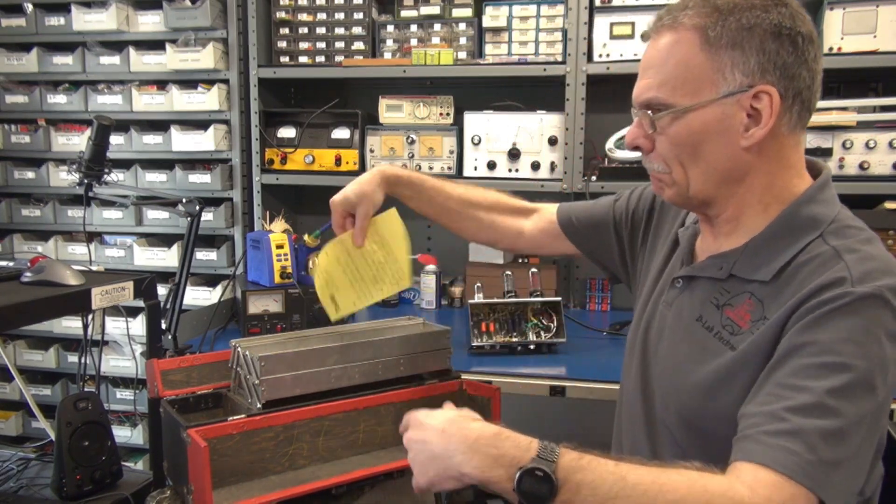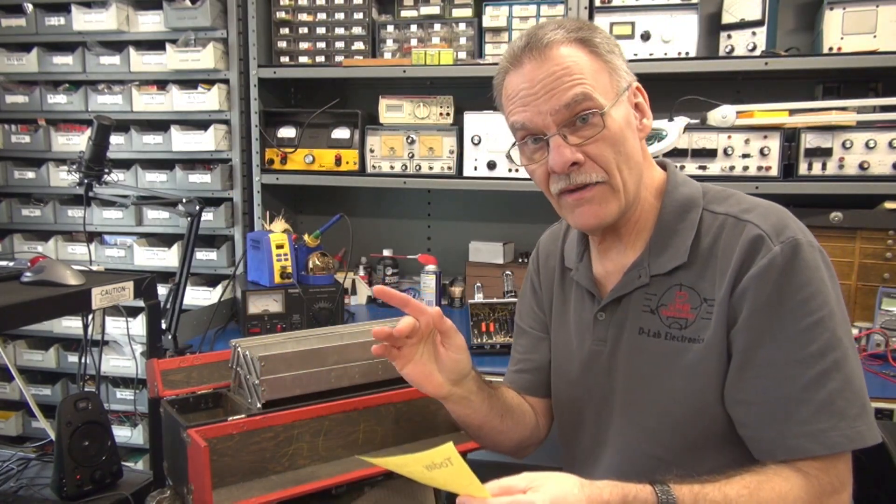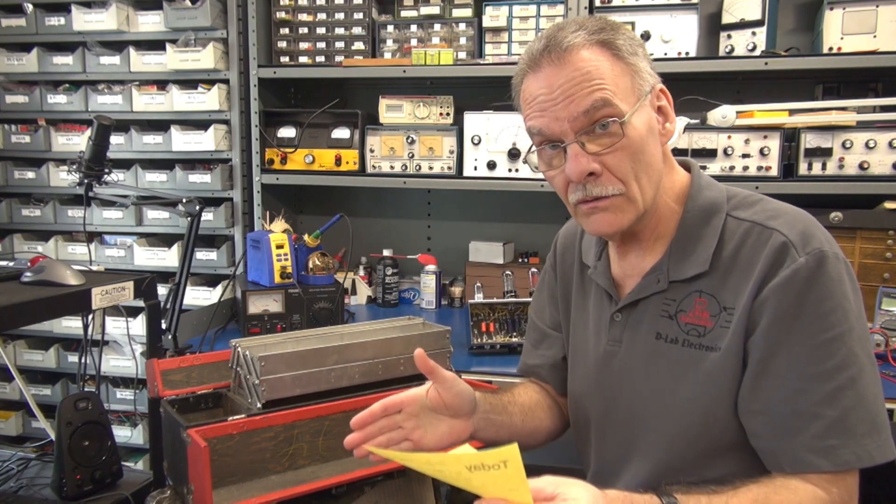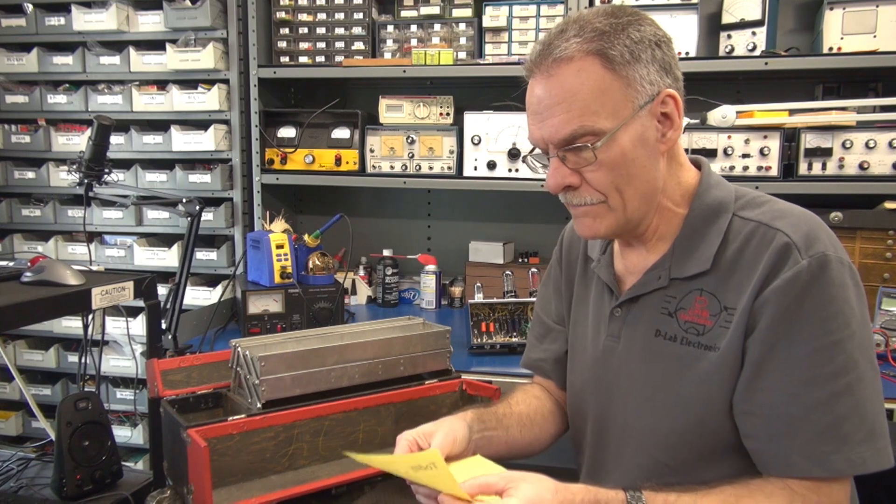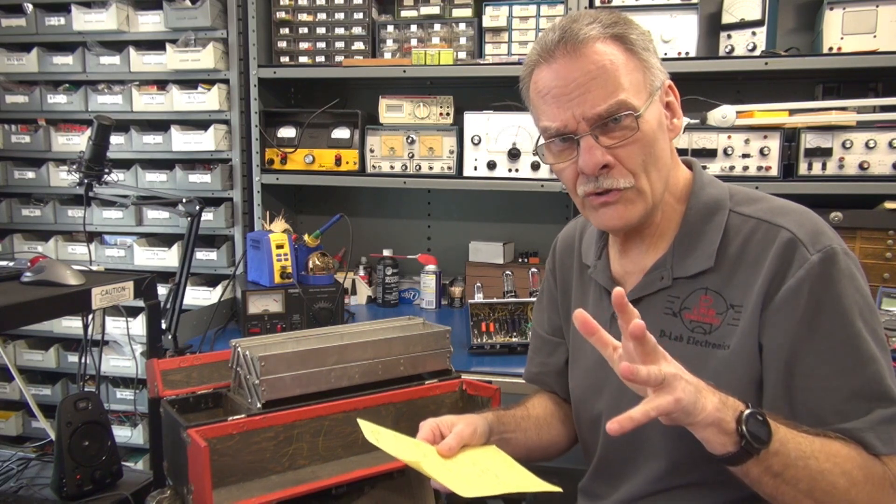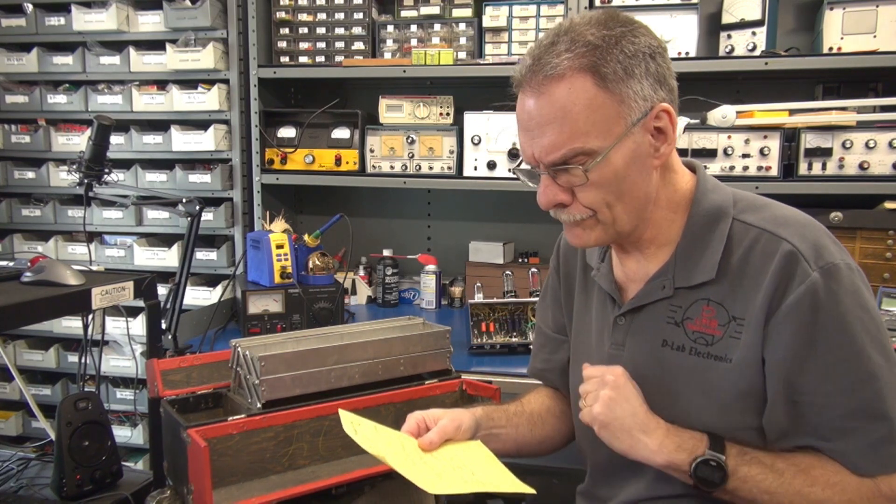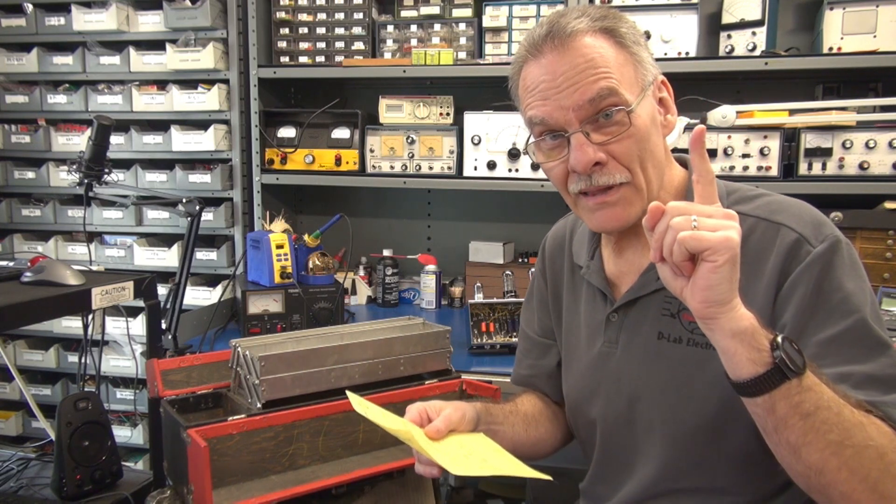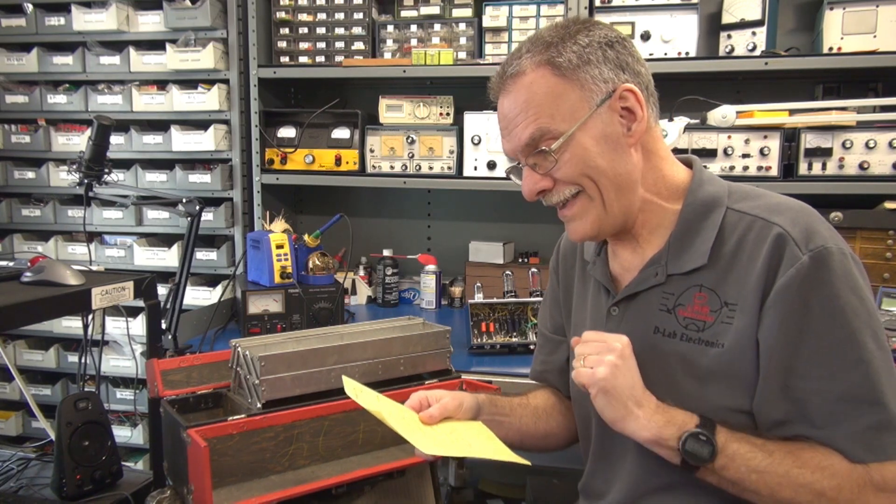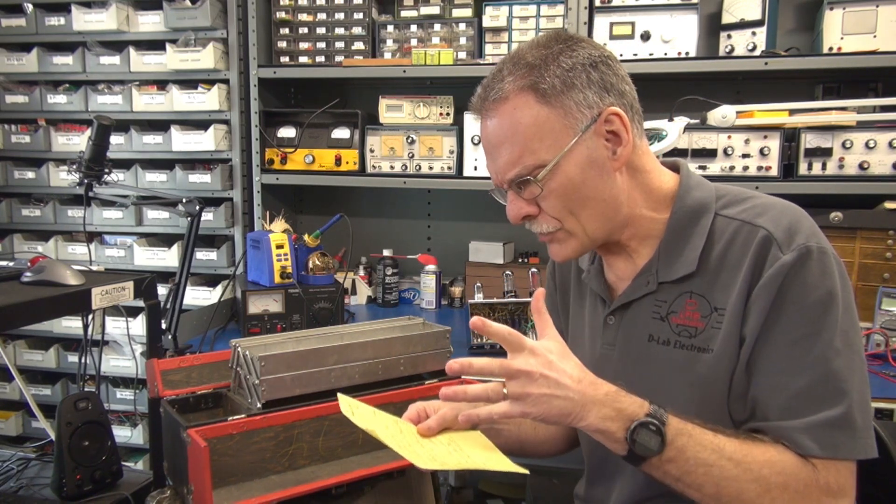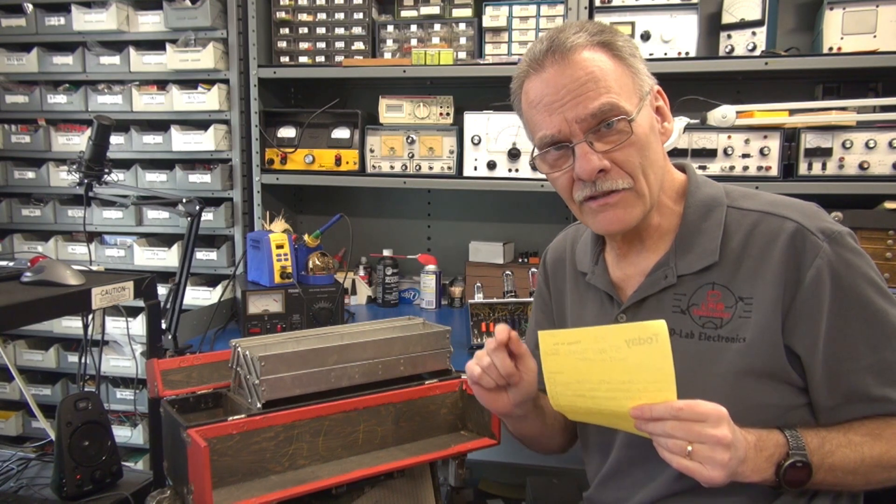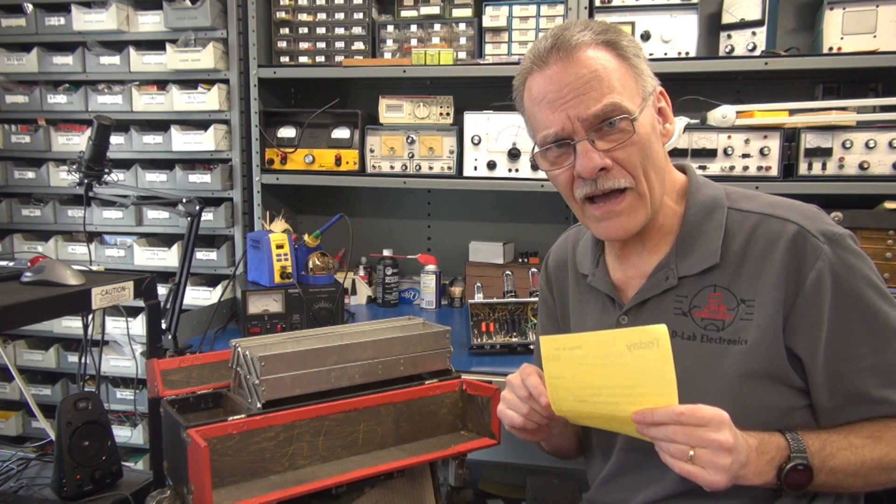Alright, what do we got going on today? We have a 5F1. This is a '57 mini tweed kit. It's actually a new build that didn't work. So the fault? No output. So here's the three things that I need you to consider while we go through the troubleshooting. Is it a power supply issue? Is it a defective tube? Or is it a bad connection? Maybe a ground?